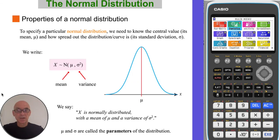To specify a particular normal distribution, we need to know its central value, its mean value, and how spread out the distribution is. In other words, what its standard deviation is.